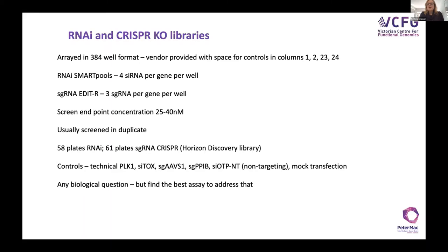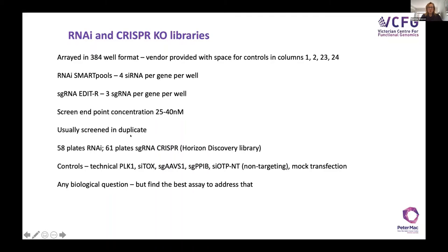Just touching on our libraries — we still use RNAi, and we now also have CRISPR. Both come from Dharmacon/Horizon Discovery. Our CRISPR Edit-R library has three single guide RNAs per gene per well, working in a pooled strategy. We screen in duplicate — for these CRISPR libraries we're talking about 61 plates to cover the whole genome, which is just shy of 19,000 genes. We put a lot of technical controls in.